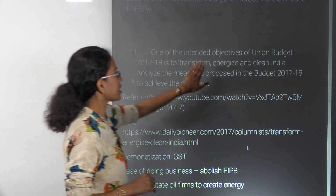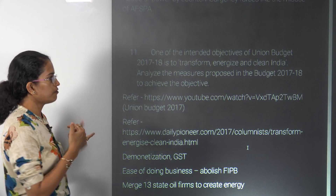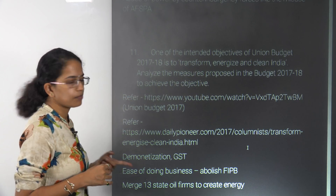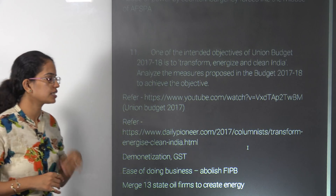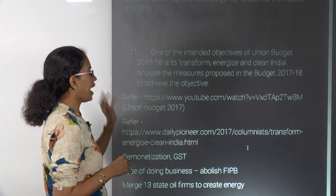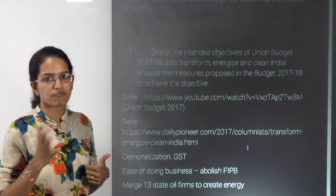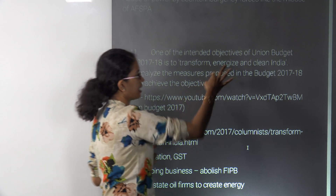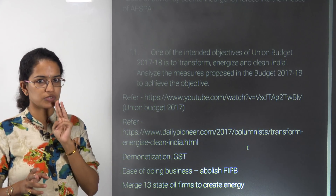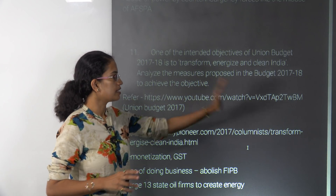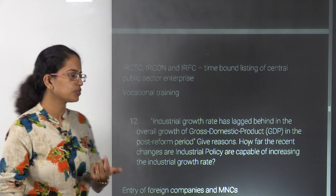For 2017, the focus was Transform, Energize, and Clean India. Under Clean India, the focus was demonetization and GST. Under Transformation, we have ease of doing business and abolition of FIPB. Under Energizing, we talked about merging the 13 oil firms to create energy supply for the nation and working towards hybrid cars. Those were the three key focuses of Union Budget 2017, covered in detail through the video lecture.